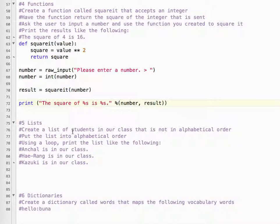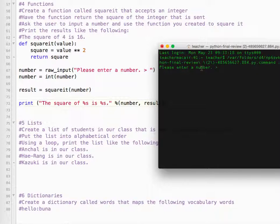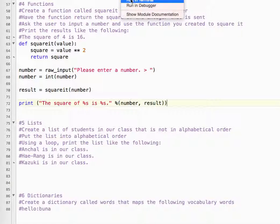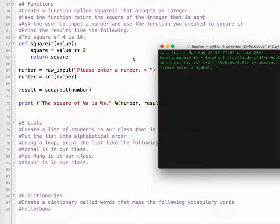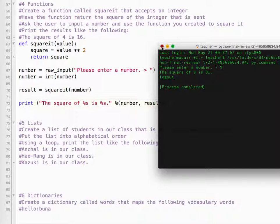Okay. So let's test that. Enter a number, four. Okay, so we know square of four is 16. Let's try another number. Something we know, nine. Okay, so we know it's working pretty well. Okay, that's that.